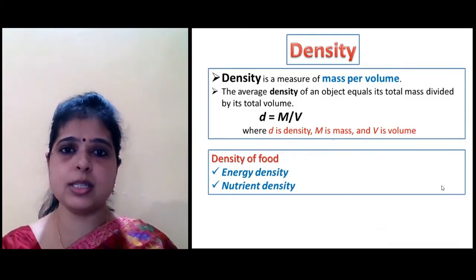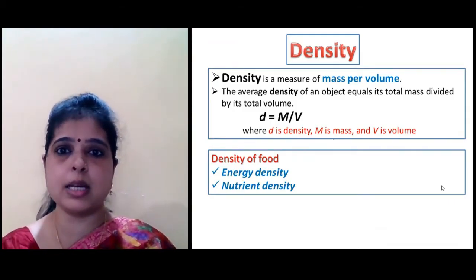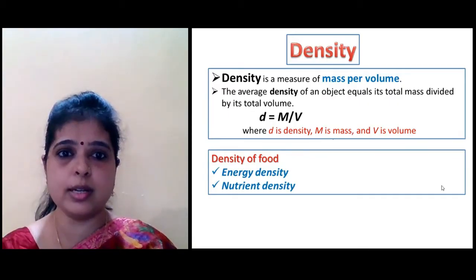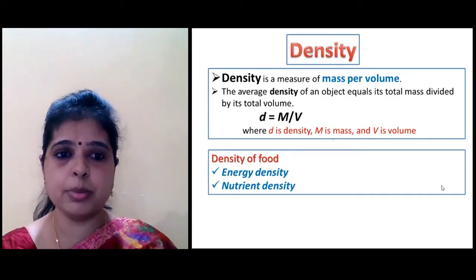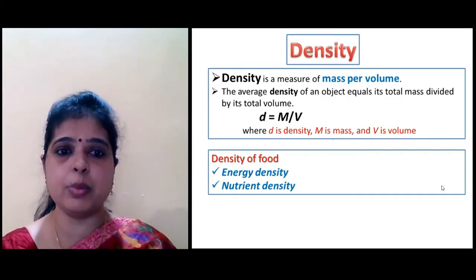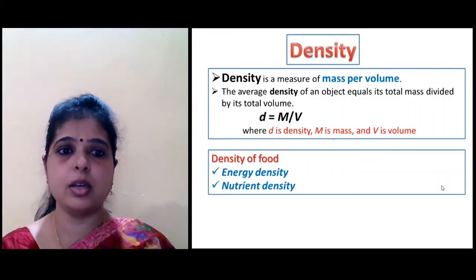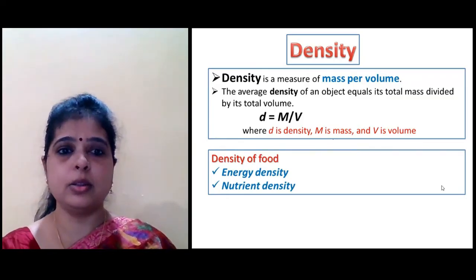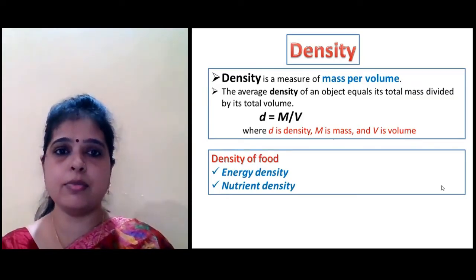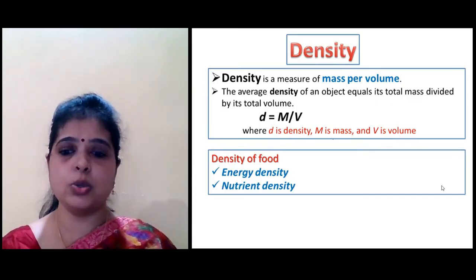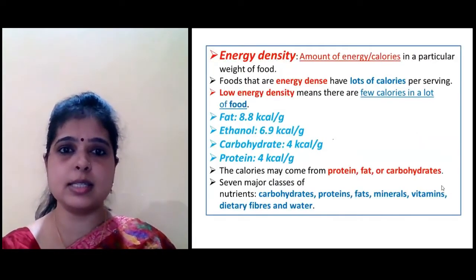Now, what is density? In general terms, mass per unit volume is called density. But in food science, there are mainly two types of density: first is energy density and second is nutrient density.